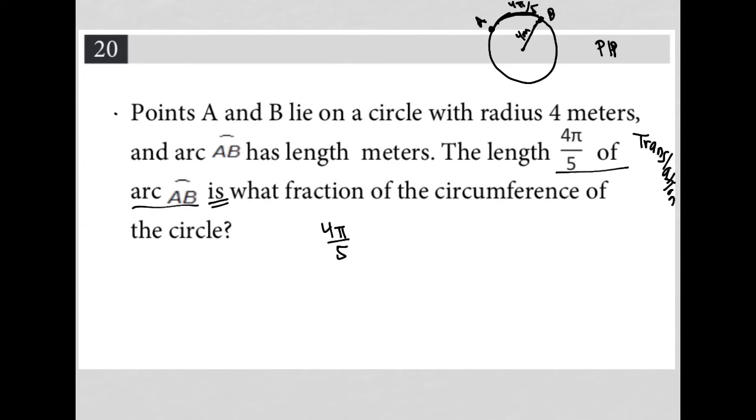Is always translates to equals. What fraction - so I'm going to just say X, knowing that X has to be a fraction. Of means multiply. The circumference of a circle - now the circumference of a circle is 2πR.